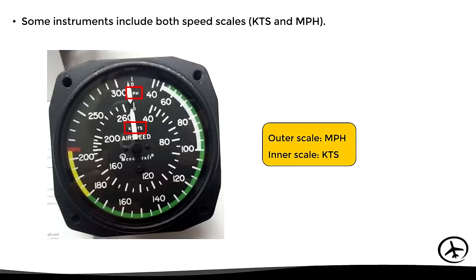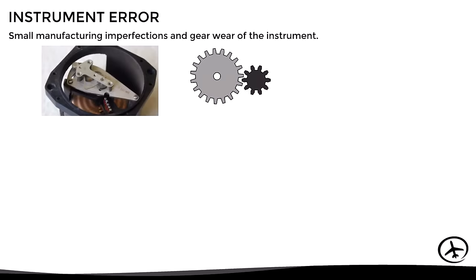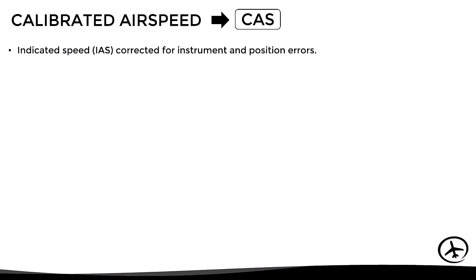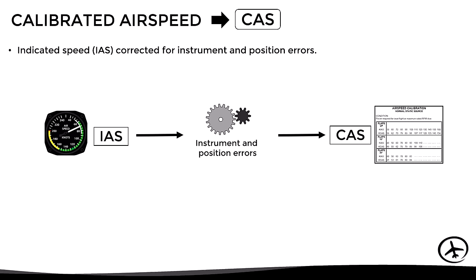The first error is the instrument error, produced due to manufacturing imperfections and wear of the gears inside the instrument. The second is the position error, which we discussed in the pitot-static system video — produced due to changes in flaps and gear configuration, angle of attack changes, and other maneuvers, affecting the pressure measured by both the pitot tube and the static port. The combination of these two errors leads to the calibrated airspeed, abbreviated as CAS, which is the indicated airspeed corrected for instrument and position errors.